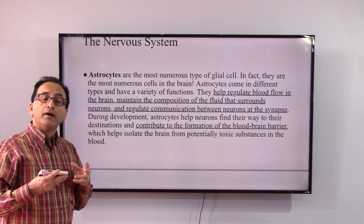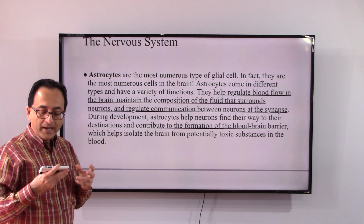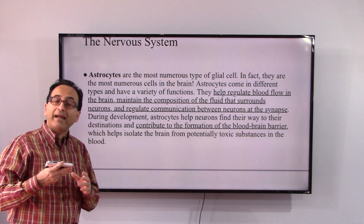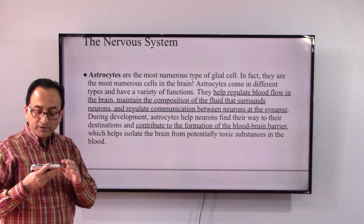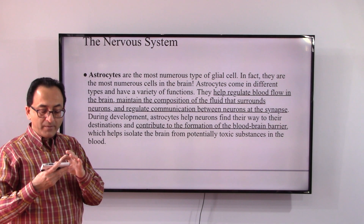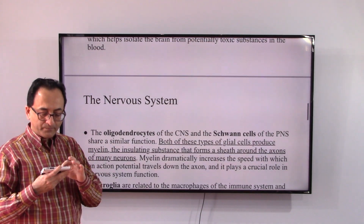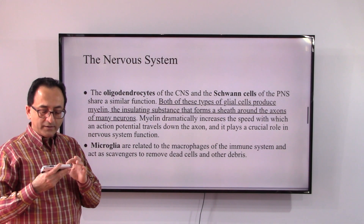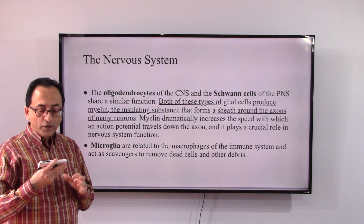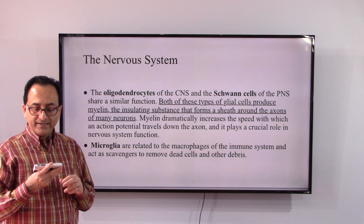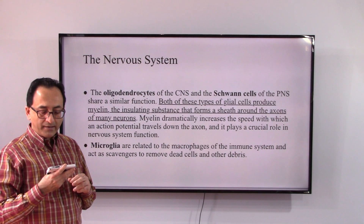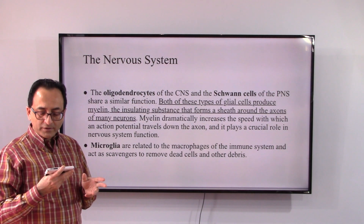Astrocytes also contribute to the formation of the blood-brain barrier, which helps isolate the brain from potentially toxic substances that may be present in the blood. The next category is oligodendrocytes and Schwann cells, found in the central nervous system and peripheral nervous system respectively.